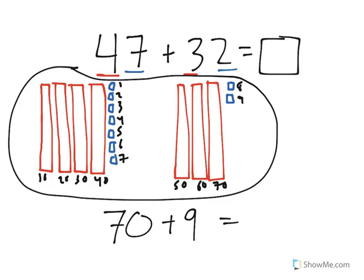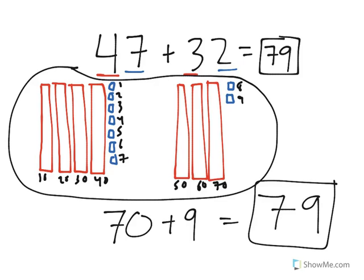So we have 70 plus 9 for a total of 79. 47 plus 32 is equal to 79. That's how you solve an addition problem with two digits using place value blocks.